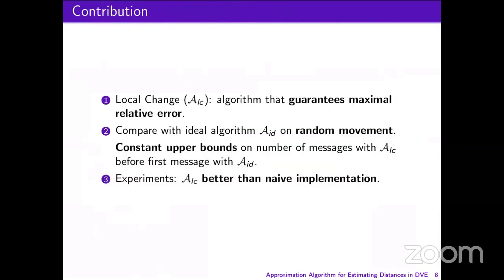This leads us to our contribution. We have three results. First, we propose an algorithm called Local Change, noted ALC, that will guarantee the maximal error is never overcome. Then, we compare Local Change with an ideal algorithm on random movements and show theoretically that there is a constant upper bound on the number of messages sent with Local Change before the first message with the ideal algorithm. Finally, we do experiments on real applications and see that Local Change is better than a naive algorithm which sends messages at regular time intervals.